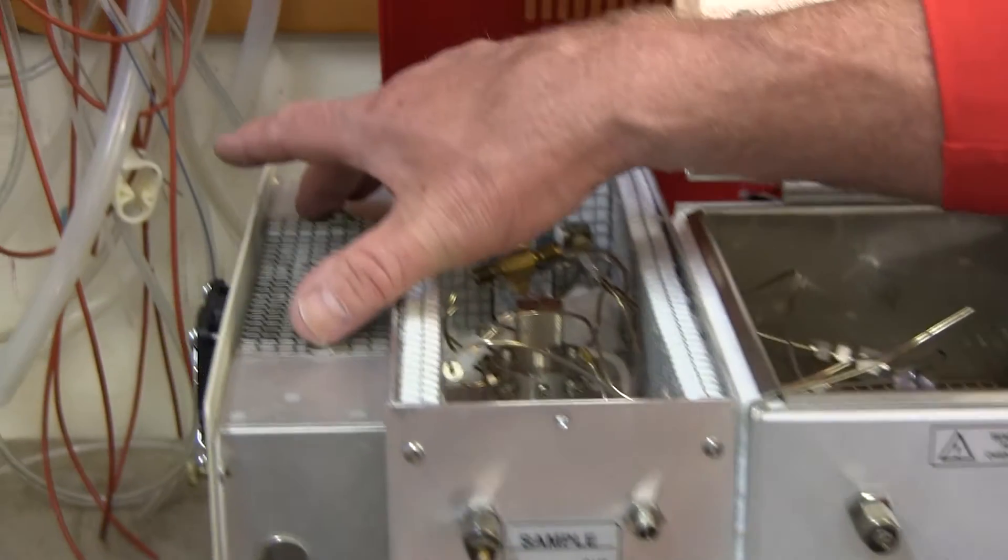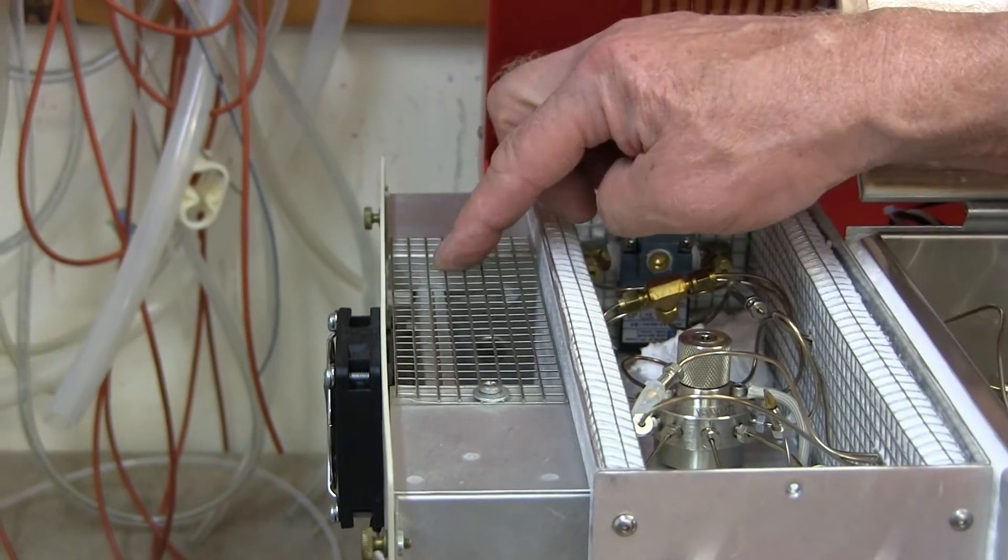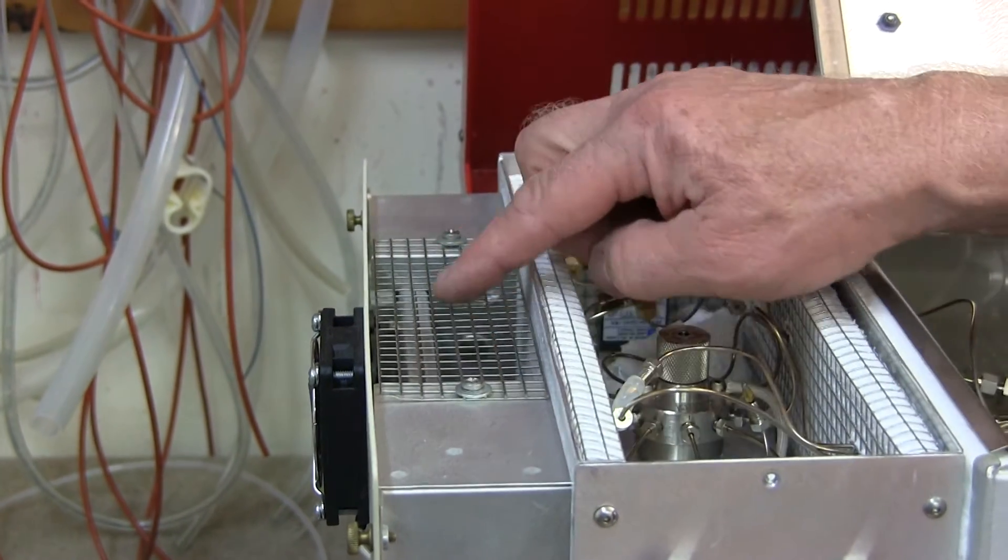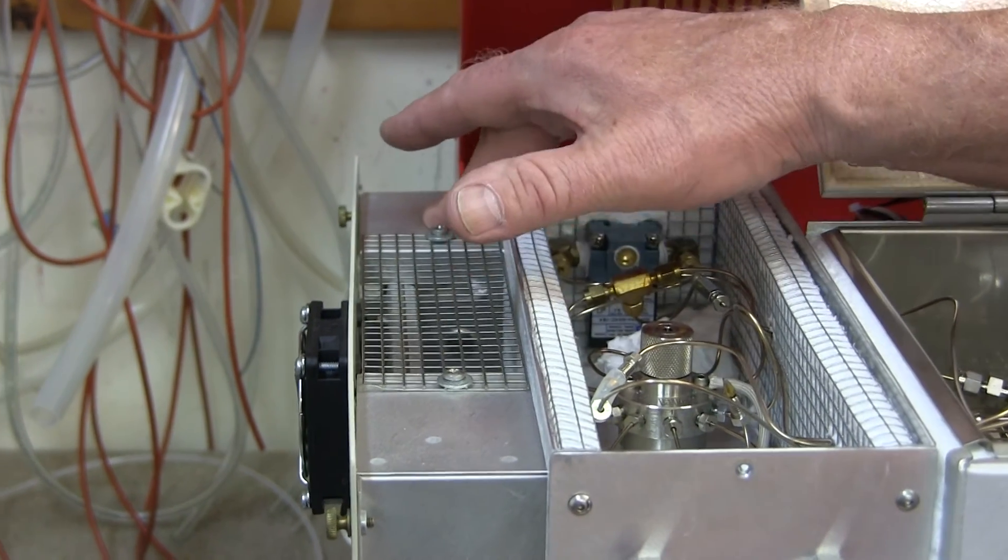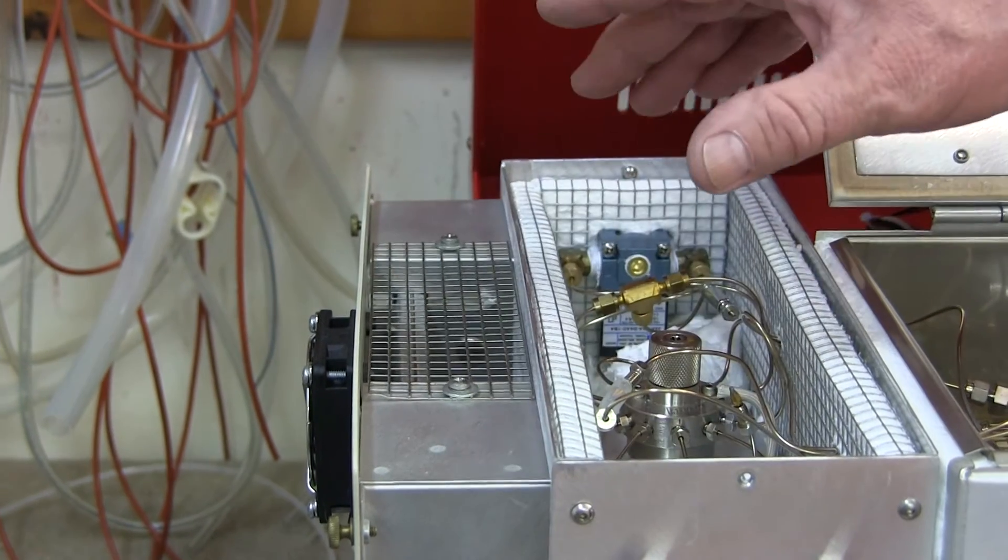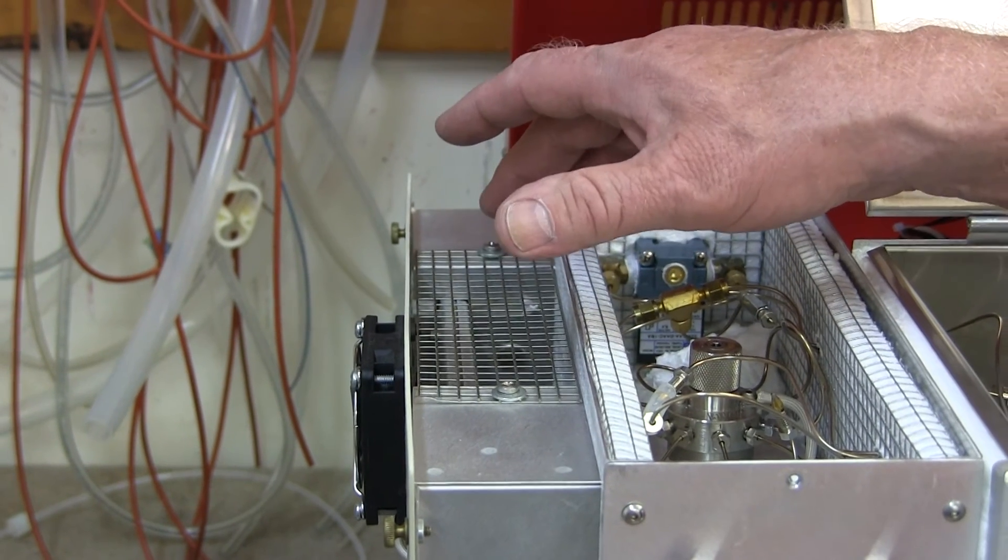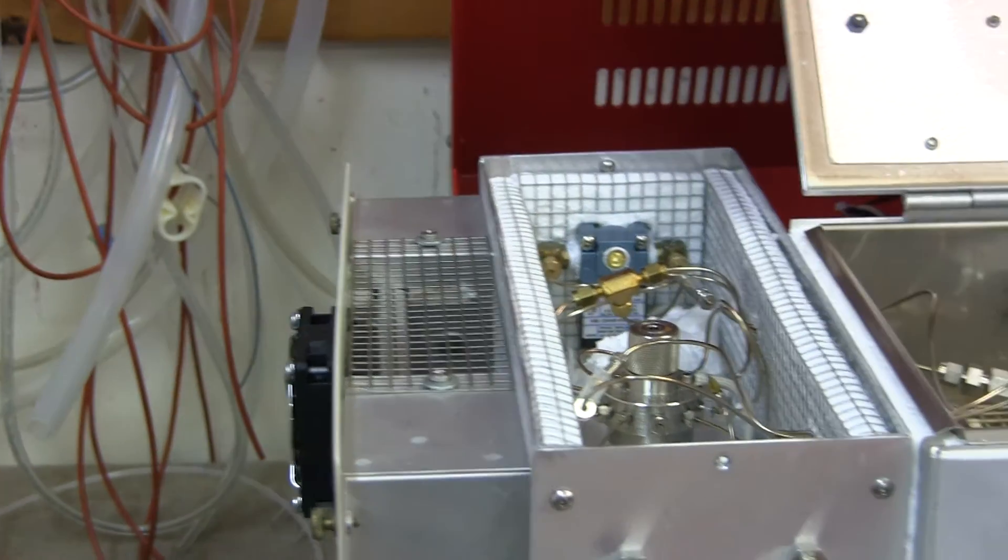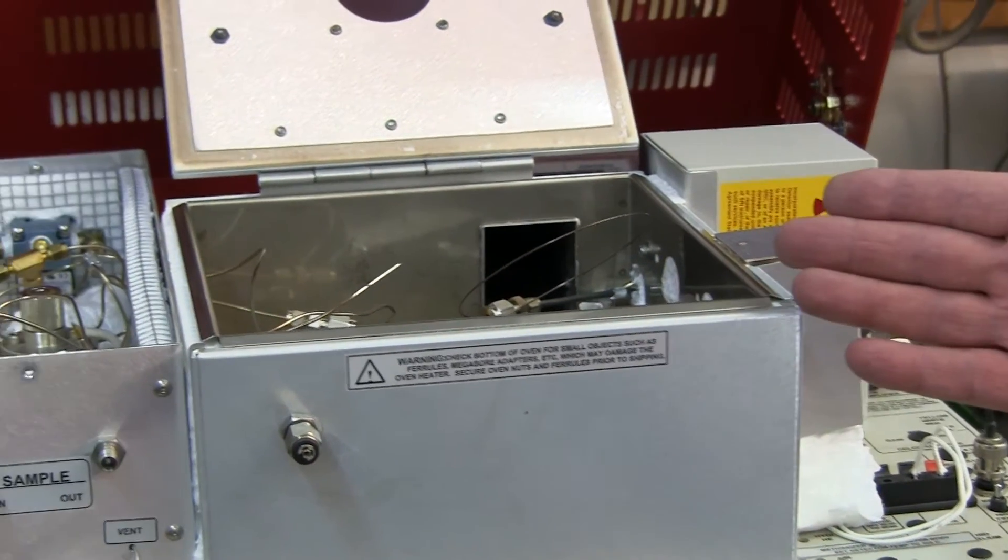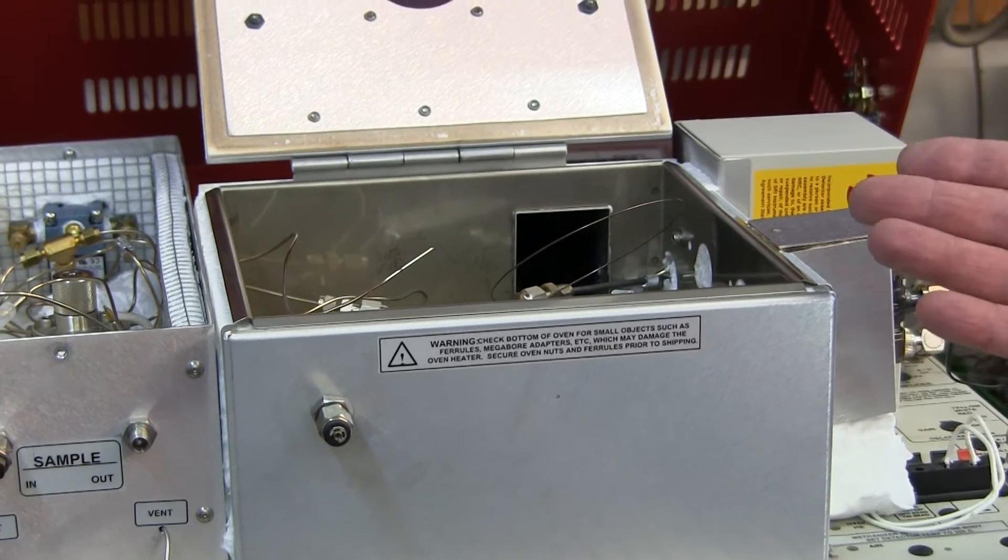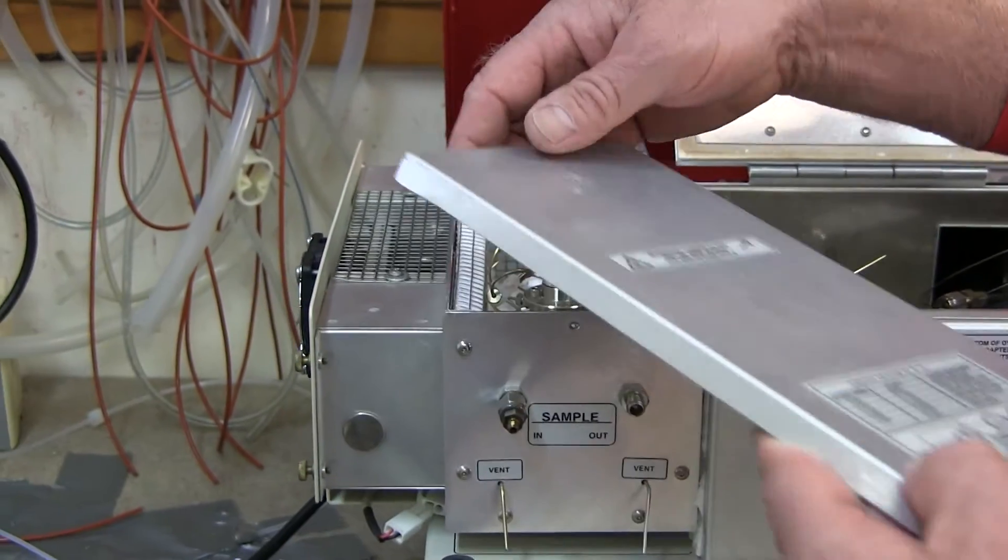This particular GC also has a pre-concentrator, sometimes we call it a trap. It's a tube filled with an adsorbent powder. If you pass a volume of gas through the tube, it retains the molecules that you're trying to measure and accumulates them. Eventually the valve rotates and this heats up and the molecules that are retained on the trap are inserted into the carrier gas and onto the column and then into the detector. This enables you to get detection limits that are thousands of times less than what the detectors would normally be able to see because you're concentrating the sample on this trap and then desorbing it.